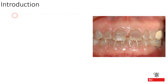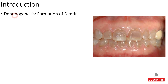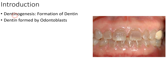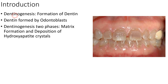Dentinogenesis is a normal physiological process which leads to formation of dentine. Dentine is primarily formed by odontoblasts, and dentine formation begins prior to the formation of enamel. Dentinogenesis occurs in two phases: first, a matrix phase where matrix is deposited, and second, the deposition of hydroxyapatite crystals.